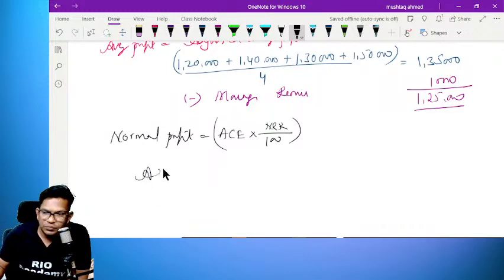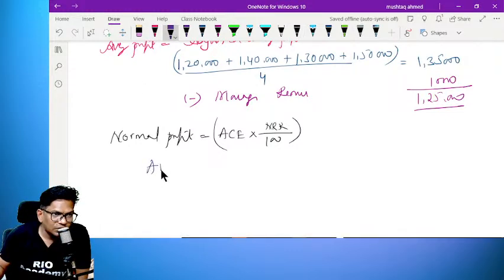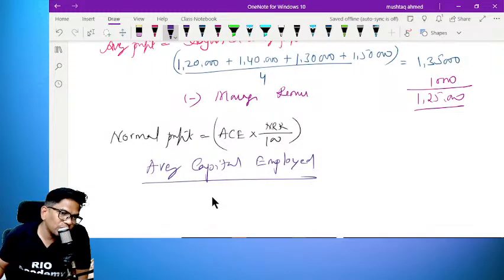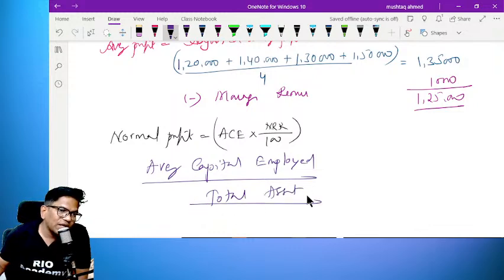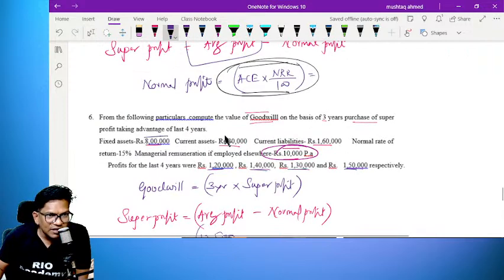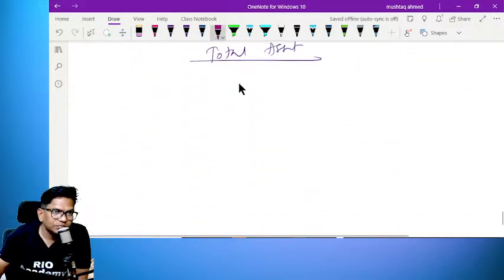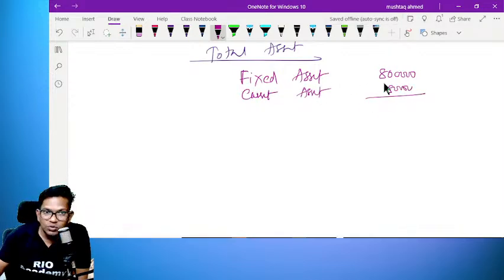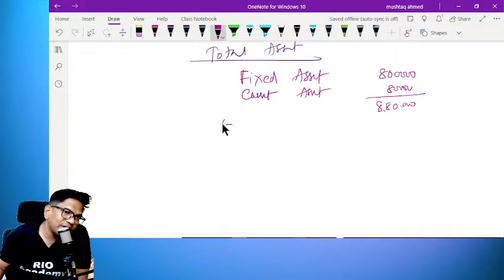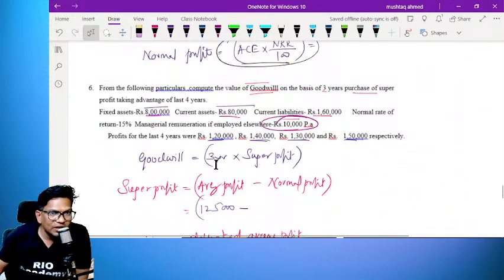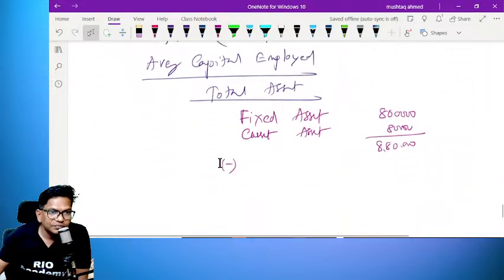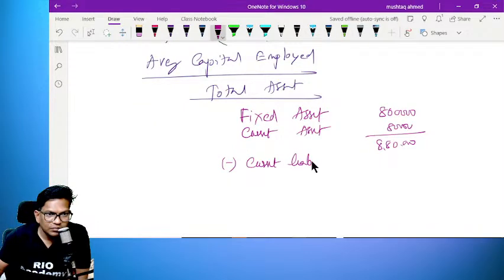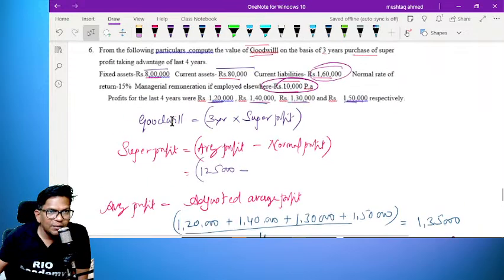Average capital employed: total assets are given as fixed asset 8 lakh, current asset 80,000. Outside liability, current liability is 1,60,000. So 8,00,000 plus 80,000 minus 1,60,000 equals 7,20,000 average capital employed.